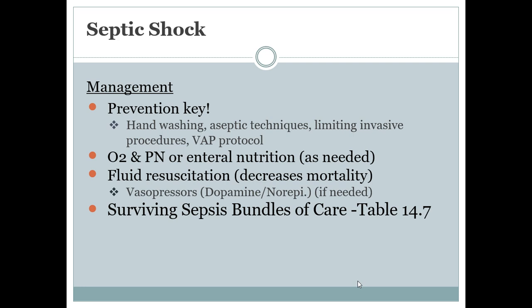A VAP protocol includes aggressive mouth care, brushing of the teeth with chlorhexidine products with all ventilated patients — that's huge in the ICU. You might also do oxygen supplementation, and parenteral or enteral nutrition is needed. Fluid resuscitation does tend to decrease the mortality. We'll do some vasopressors if needed, such as dopamine or epi.